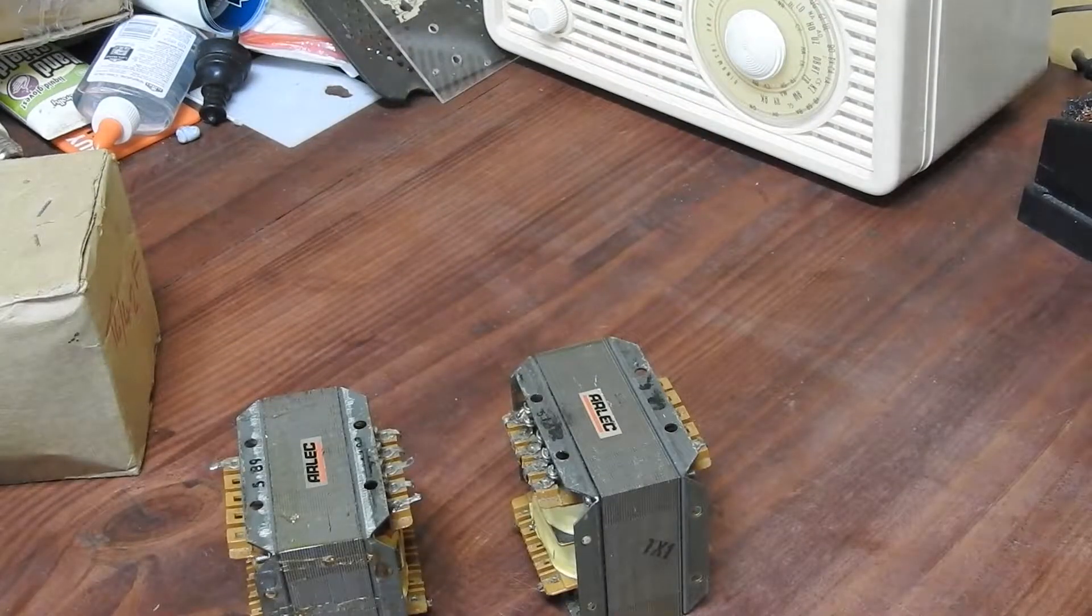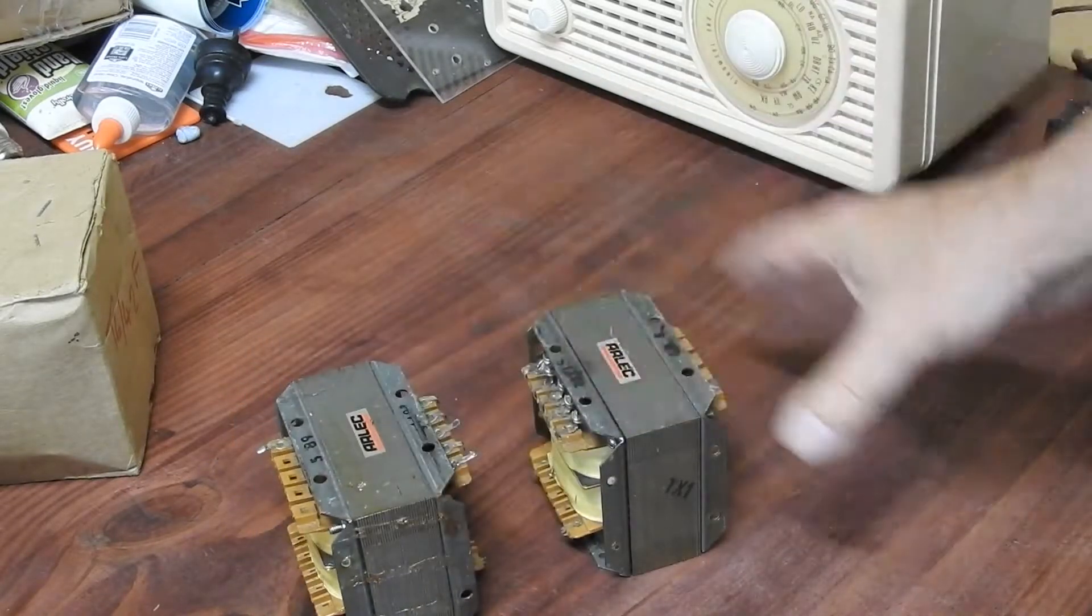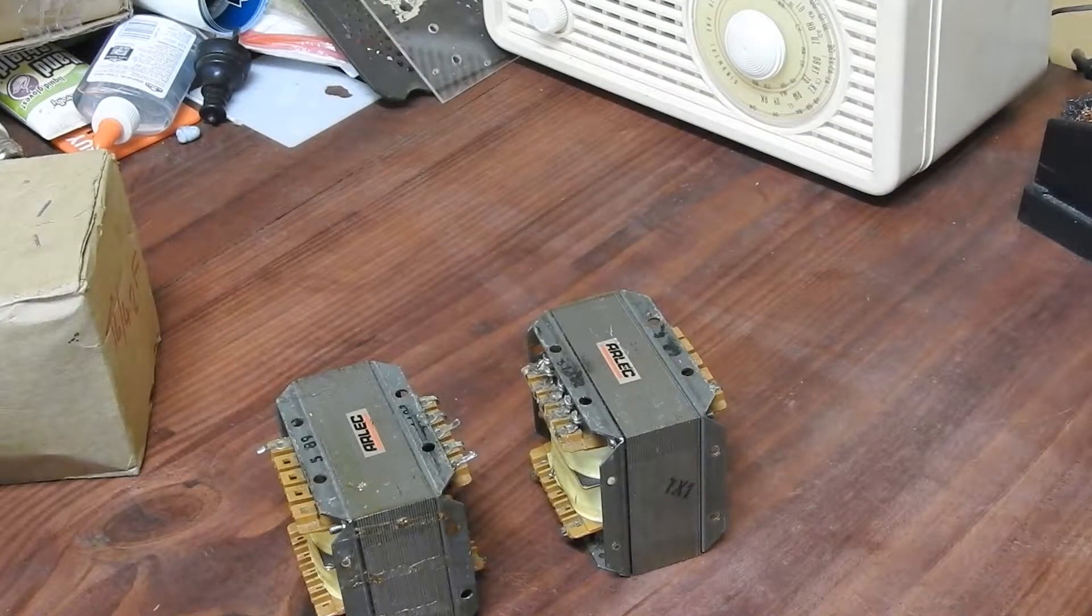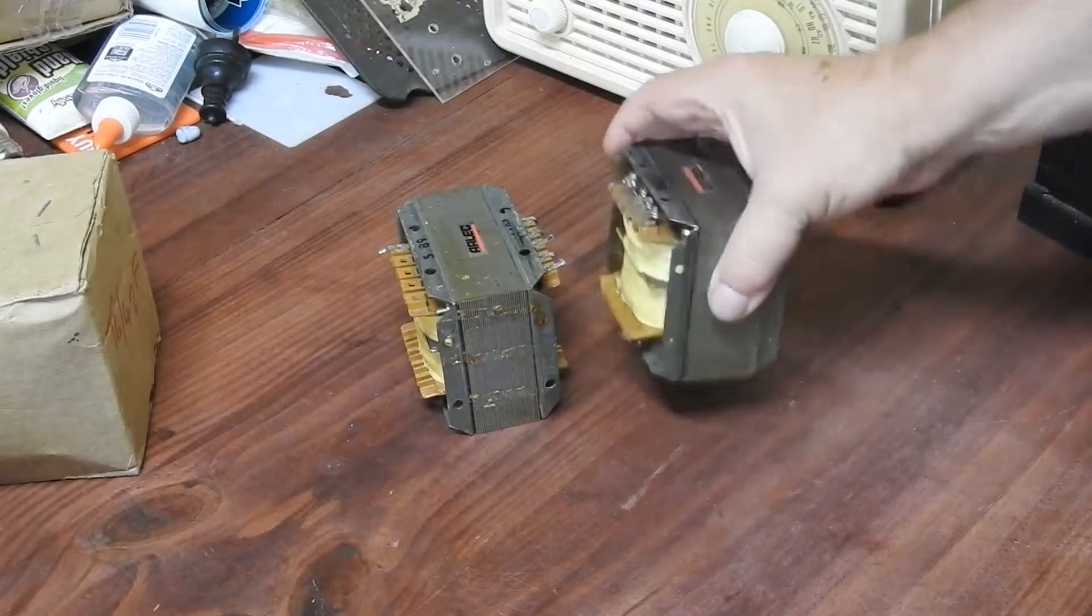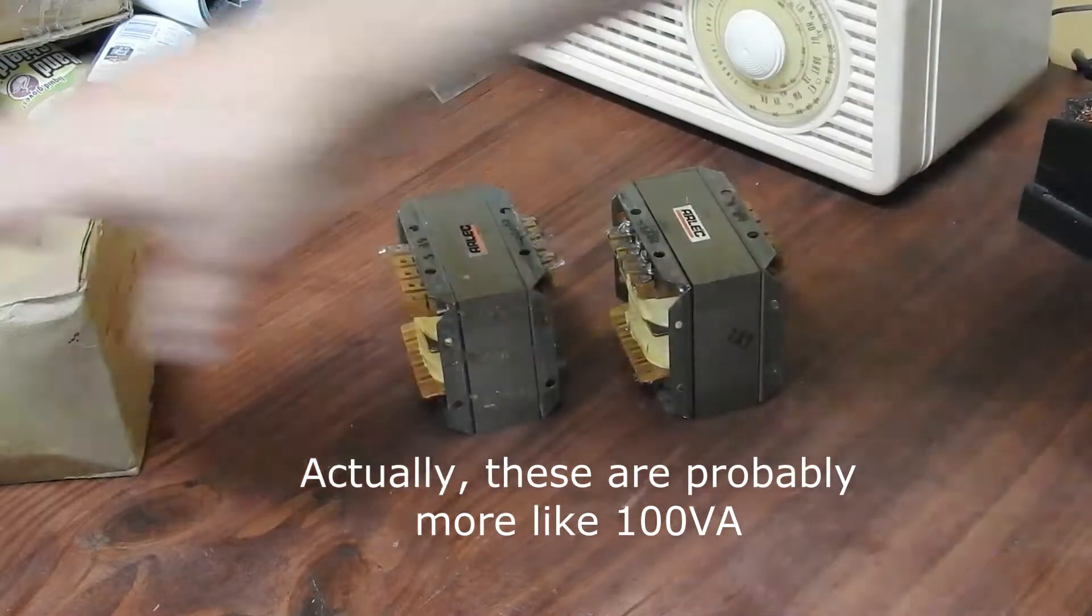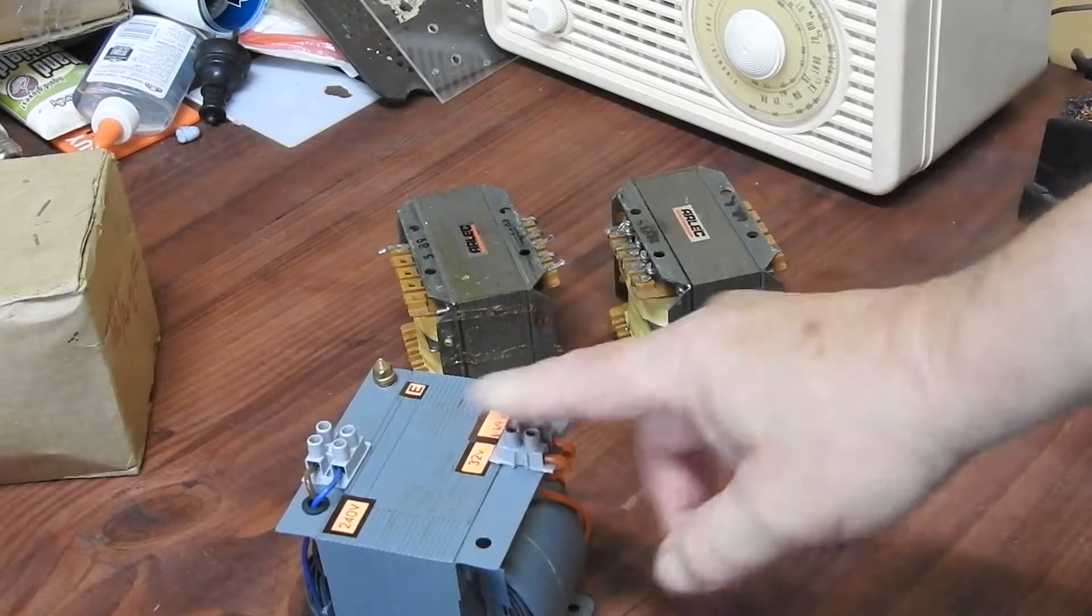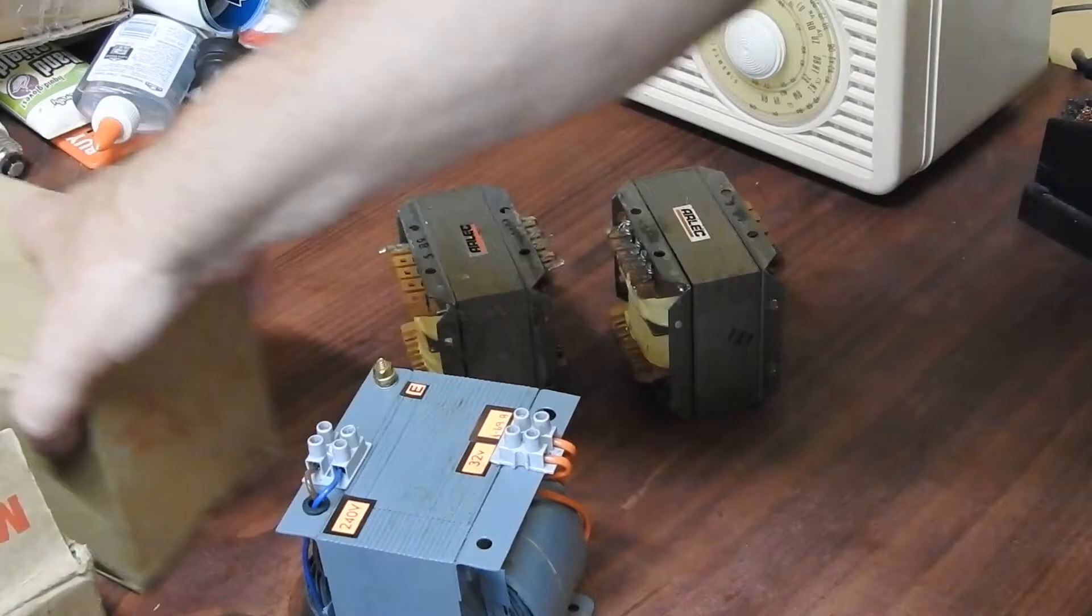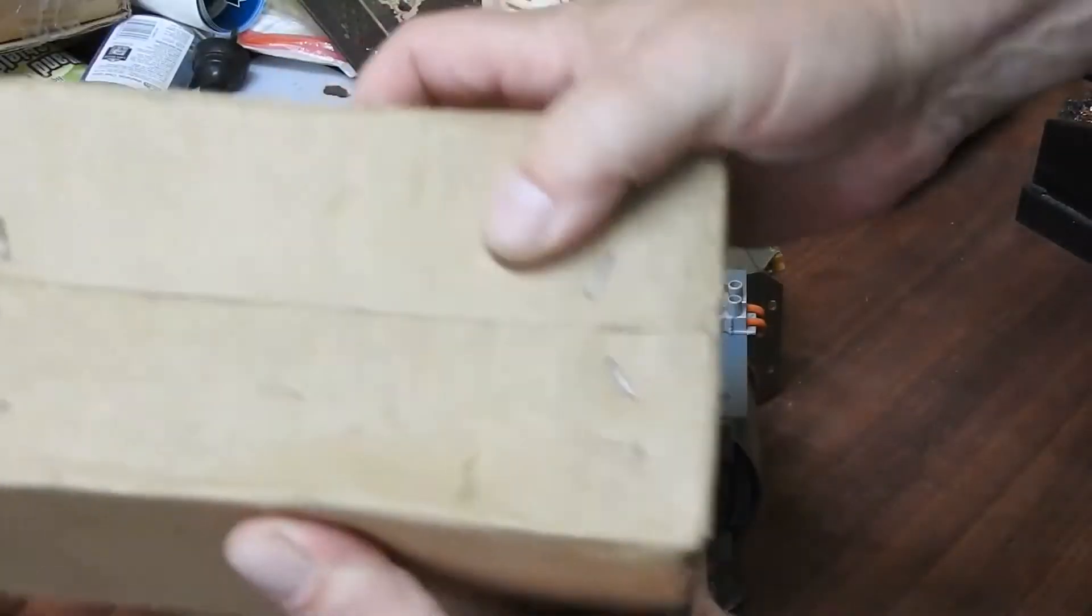Now I wanted to do a bit of experimenting to see what sort of efficiency I can get out of them, how much loss there is, how hot they get, how many watts goes in versus how many watts comes out. There's these which I estimate at maybe 60 VA, and if I want to go up a bit I've got a couple of these 32 volt, 32 volt, 4.7 amps, that comes out to 150 VA, 150 watts, and I've got two of them. This one's even brand new in box.